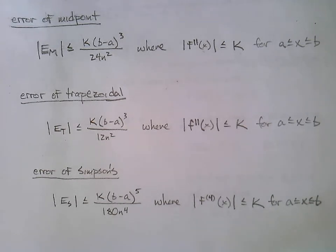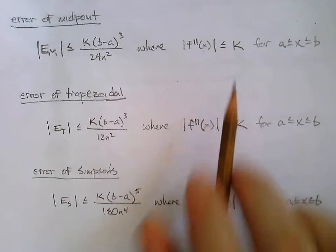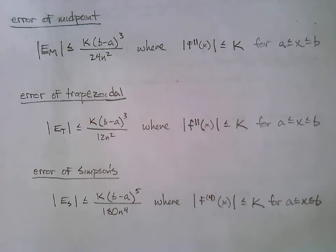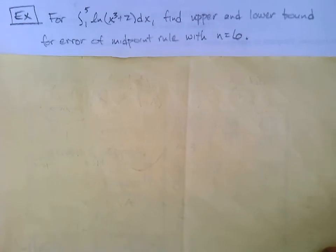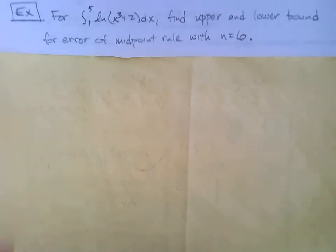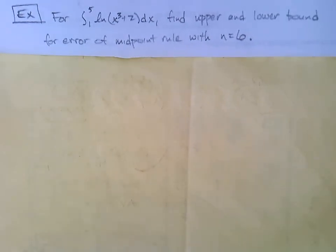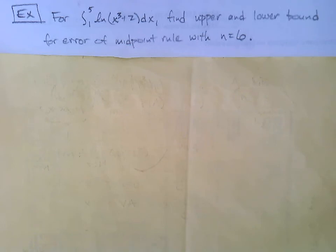That might look a bit intimidating, and finding K is certainly the tricky part. Let's do an example with the error of the midpoint rule, using the same integral we've been using throughout this section: the integral from 1 to 5 of the natural log of (x³ + 2) dx. We'll find the upper and lower bound for the error of the midpoint rule with n = 6.